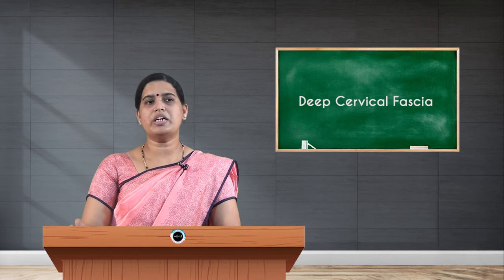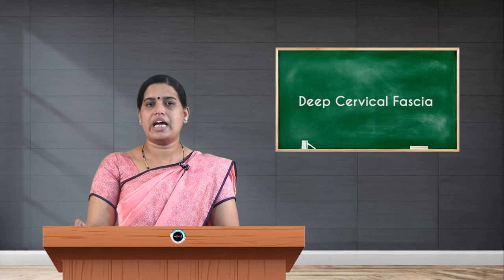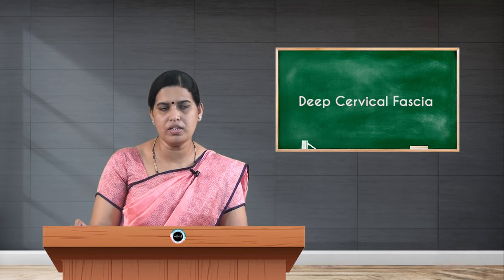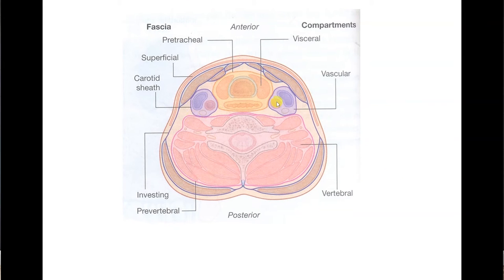Looking at the investing layer: once you reflect the platysma muscle you find the deep fascia forming the roof of the triangles of the neck. In a transverse section of the neck, the investing layer — shown in blue — wraps all around the neck, splitting and enclosing the two important muscles: sternocleidomastoid anteriorly and trapezius posteriorly.